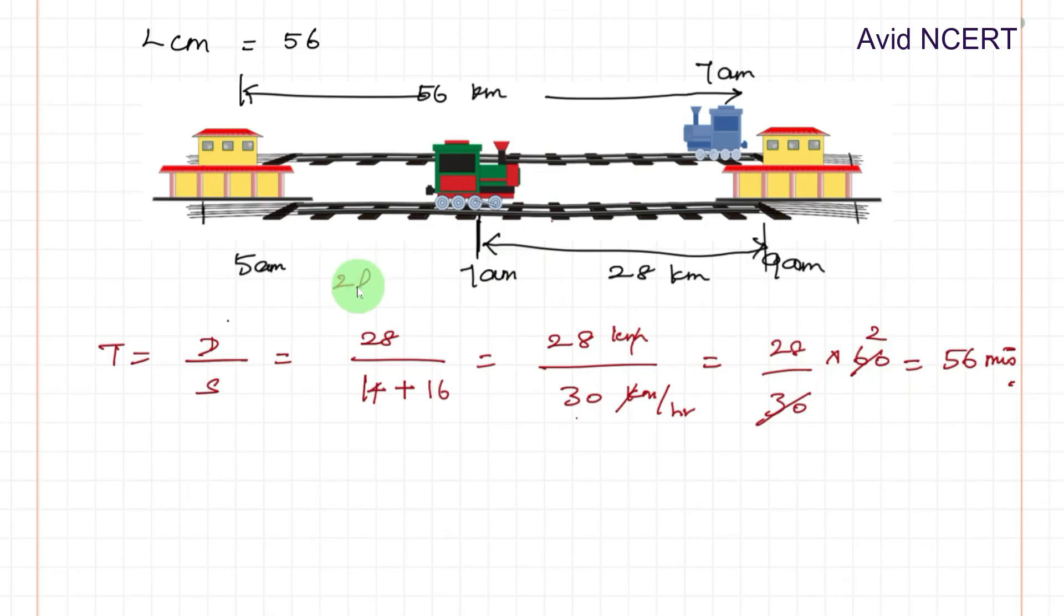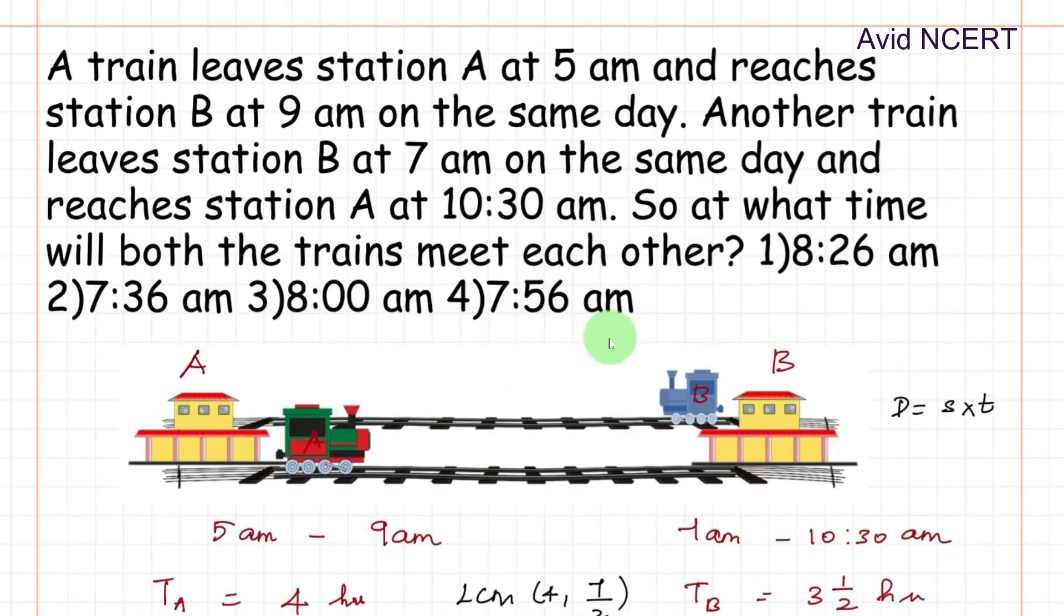Since there is already 2 hours passed here, 2 hours plus 56 minutes equals 2 hours 56 minutes. So train A should travel 2 hours 56 minutes to meet train B. Since it started at 5 a.m, 5 plus 2 hours and 56 minutes equals 7:56. The trains meet at 7:56 a.m.